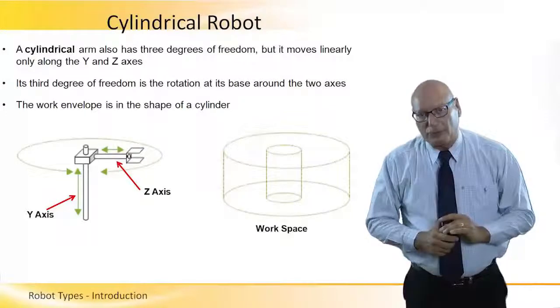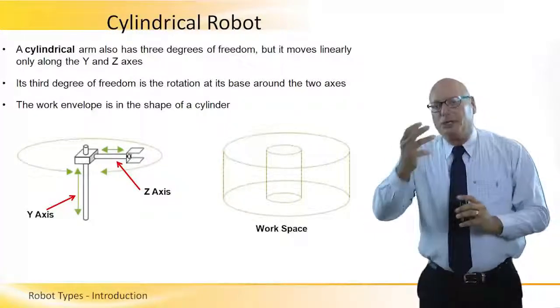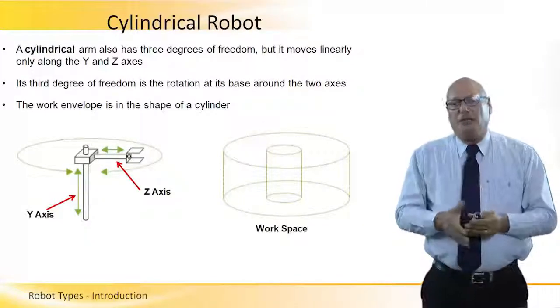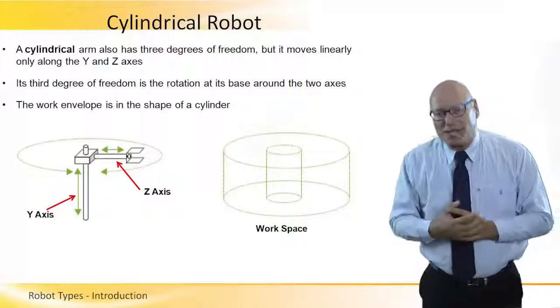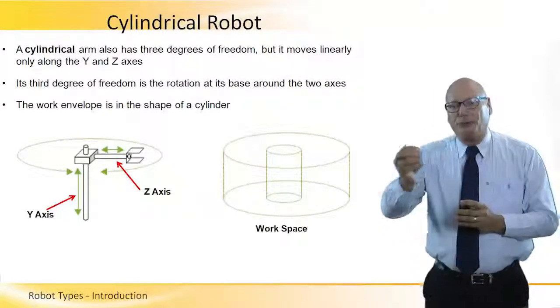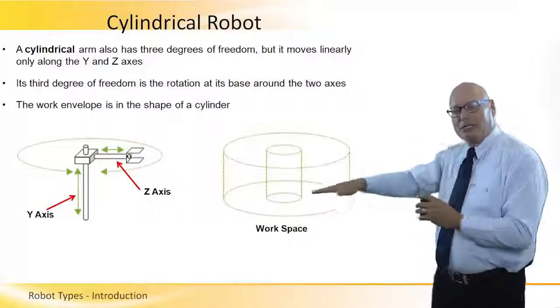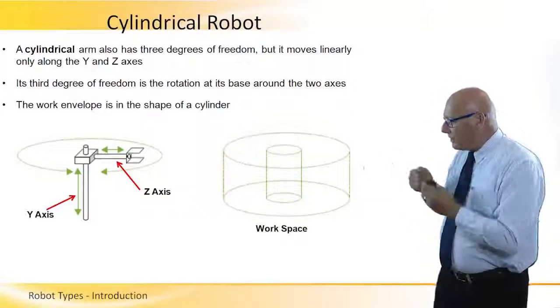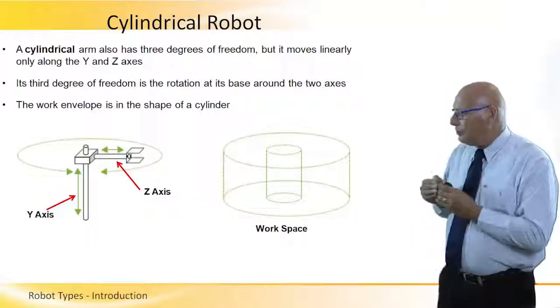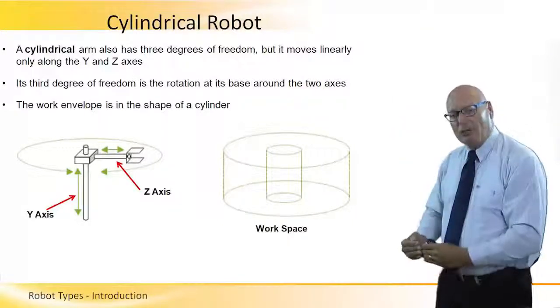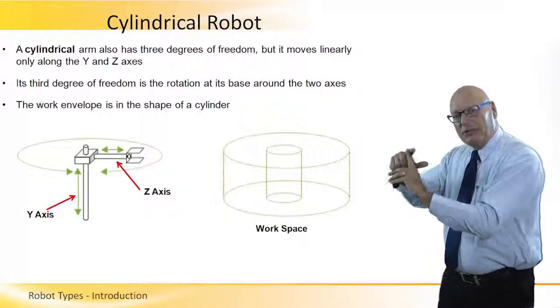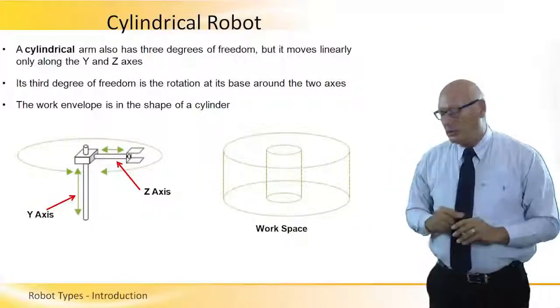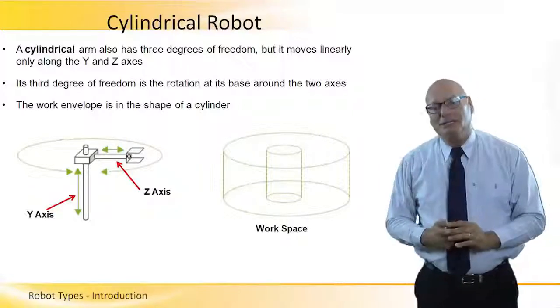Cylindrical robot. Cylindrical arm has three degrees of freedom. It moves linearly in the Y and Z axis. And the third degree of freedom is a rotation based around these two axes. So the Z axis can go in and out. The Y axis goes up and down. Once we reach that particular point, then we can go all around with the third degree of freedom. So the workspace, as we see very clearly, is a cylindrical one.